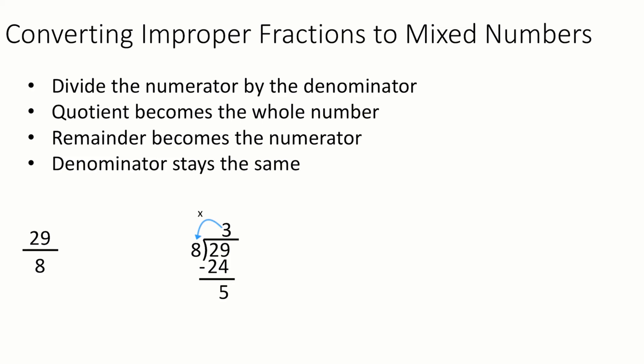So 29 minus 24 leaves us with a remainder of 5. So now that we've finished the long division, what we call the quotient, the whole number part of our division, becomes the whole number part of the mixed number. And then the bottom part, the remainder of 5, becomes the numerator of the fraction that goes along with it. And then the 8 remains as the denominator. So this becomes 3 and 5 over 8.